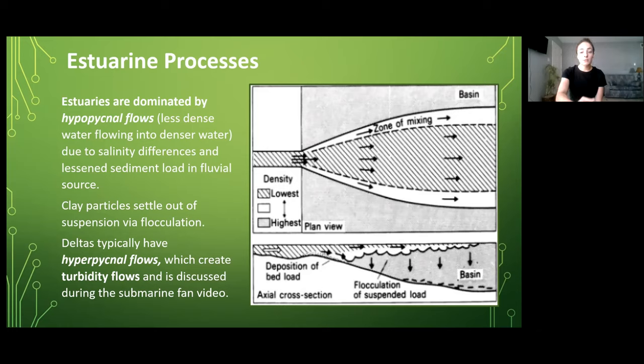This is typically because the fluvial source has a high sediment load and this causes turbidity flows which will be discussed in the submarine fan video. Additionally, I discuss more about deltas and the processes behind delta deposition in the deltas video. And lastly if you want to go back and look at the lacustrine video you can learn about the deposition and sedimentary structures that form due to hypo-, hyper-, and homopycnal flows.